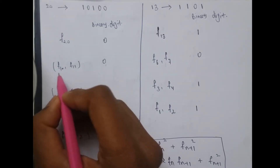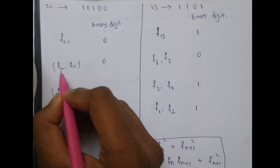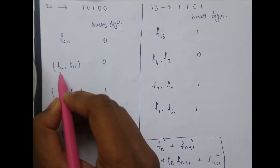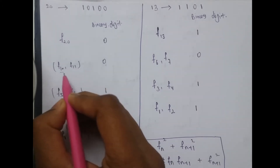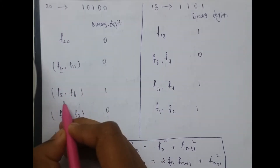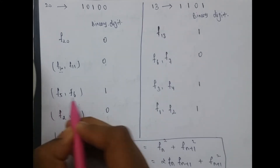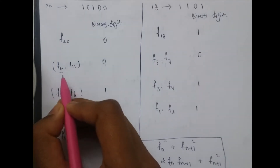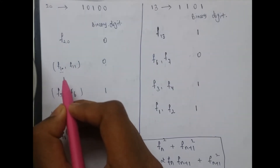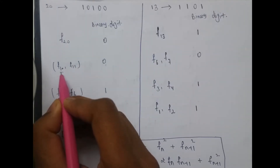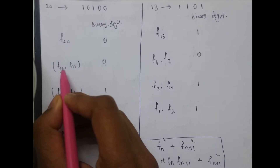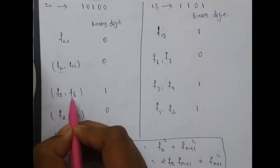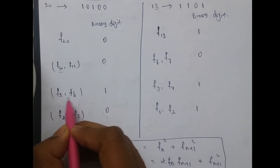Again we have to calculate f(10) and f(11). So for calculating f(10) we need f(5) and f(6), which is half of 10 — since 2n is 10, n is 5 and n+1 is 6.